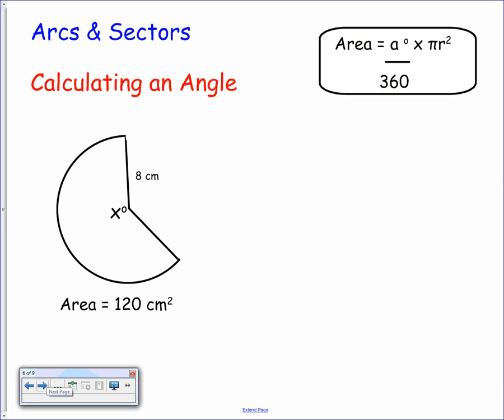Now as well as this, you're sometimes required to work backwards. For example, they might ask you to calculate the size of the angle at the center. Other types of questions might include calculating the length of the radius or diameter. For now, we're going to look at the size of an angle. The key to the question is looking at the other piece of information that's given to you. You see at the bottom here we have the area of the sector is 120 square centimeters. That tells you that you need to use your area formula.